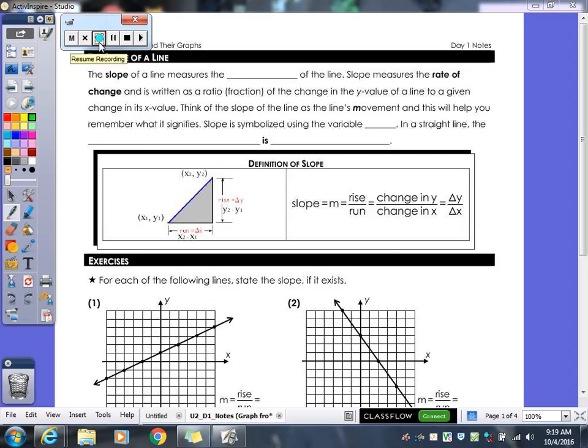We are starting off our notes today talking about the slope of a line which you guys have been talking about quite a bit for the last couple of years. The slope of the line measures the steepness of the line. The slope of line measures the rate of change, which actually this phrase right here, rate of change, is pretty much what we're going to be using for the rest of the year.